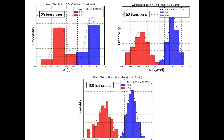Next, we vary the number of frames analyzed. Rather than 100 transitions, using 20 or 50 transitions increases the uncertainty, but the estimated free energy remains similar overall. In this way you can tune the number of transitions to reduce the error to an acceptable level.